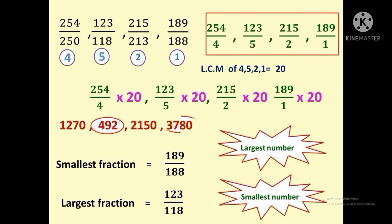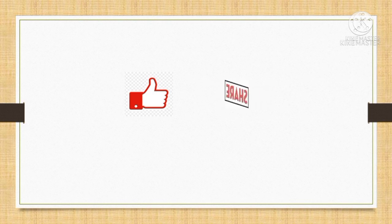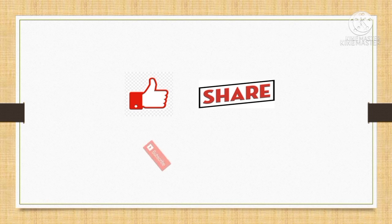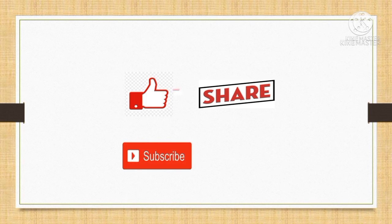This trick is very easy and can be used to find the largest and smallest improper fraction. Once we know the largest and smallest fraction, we can arrange all the fractions in ascending or descending order. This trick is very helpful in competitive exams. If you like this video, press the like button, share it with your friends, and subscribe to our channel Tricky Tips Max. Press the bell icon to receive notifications whenever a new video is posted. Thank you.